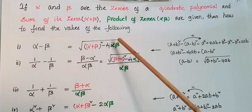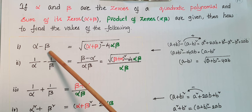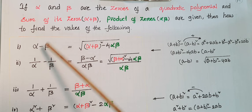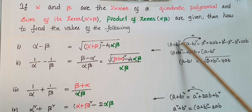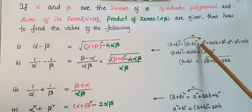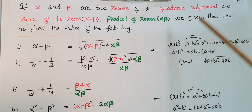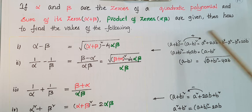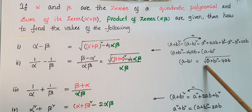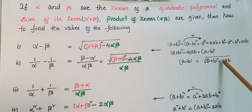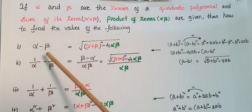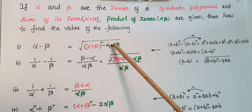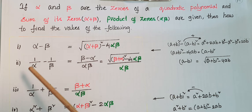So we have to convert these expressions in terms of alpha plus beta and alpha beta. The first one is alpha minus beta. We know that (a+b)² minus (a-b)² equals 4ab, so (a-b)² equals (a+b)² minus 4ab, therefore a minus b equals square root of (a+b)² minus 4ab. So alpha minus beta equals square root of (alpha+beta)² minus 4·alpha·beta.